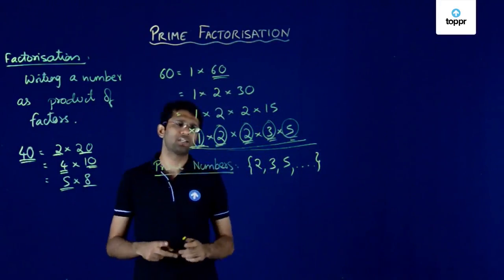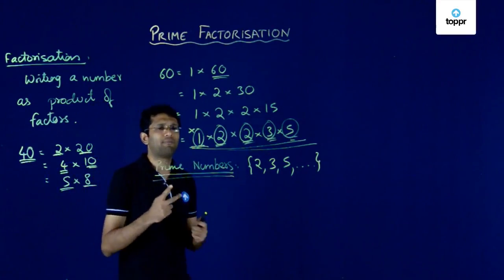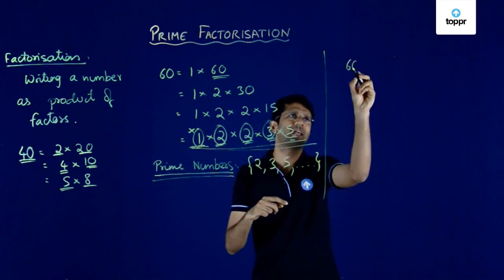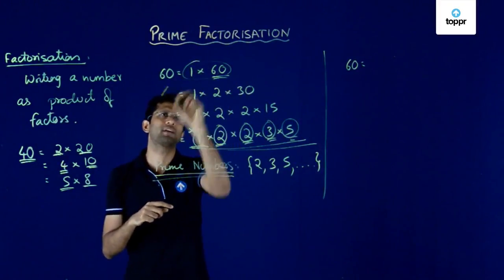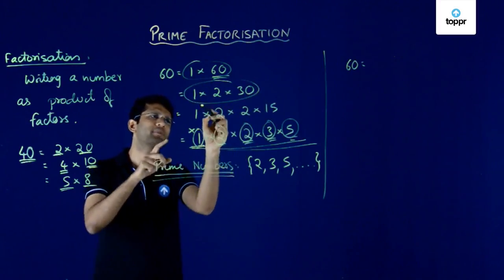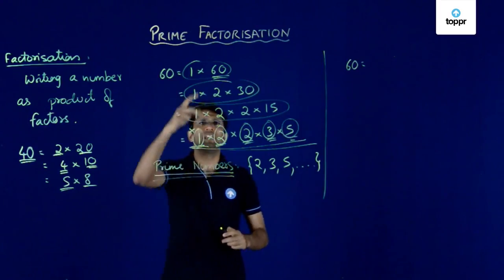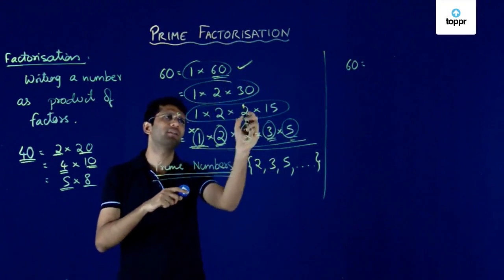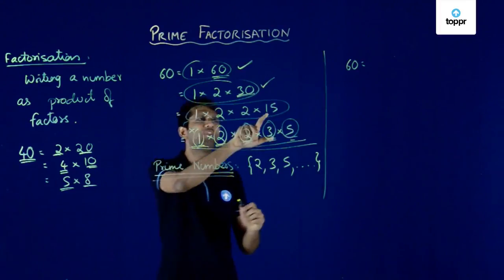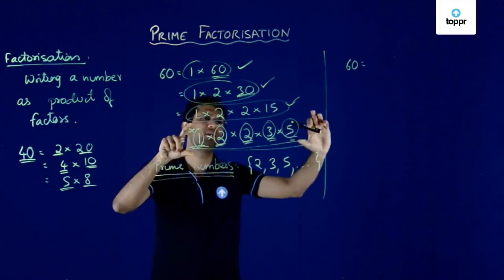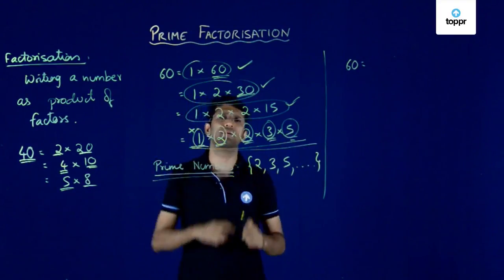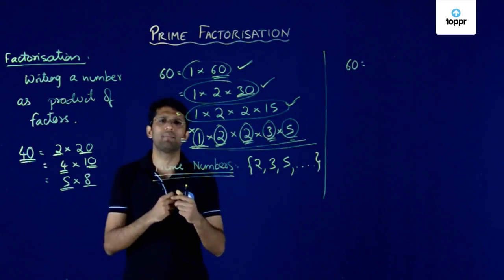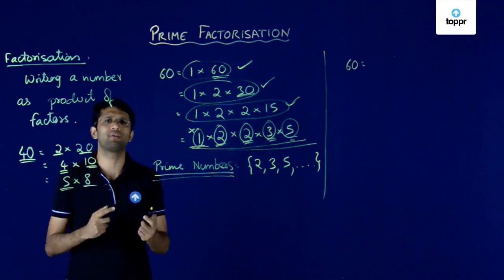Now we are trying to understand prime factorization. Suppose we are given a number say 60. I can write 60 as a product of 2 factors, or as a product of 3 factors, or as a product of 4 factors and so on. But note that in the final equation, none of these numbers can be factored into smaller numbers, and so we can say that this gives us the prime factorization of 60. Prime factorization means whenever we express a given number as a product of prime factors.